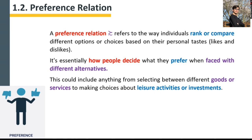Or there can be another type of person who says, 'I'm indifferent between both.' Preference relation is essentially how people decide what they prefer when faced with different alternatives. When there are different alternatives, by preference relation people decide which one they should prefer over another.